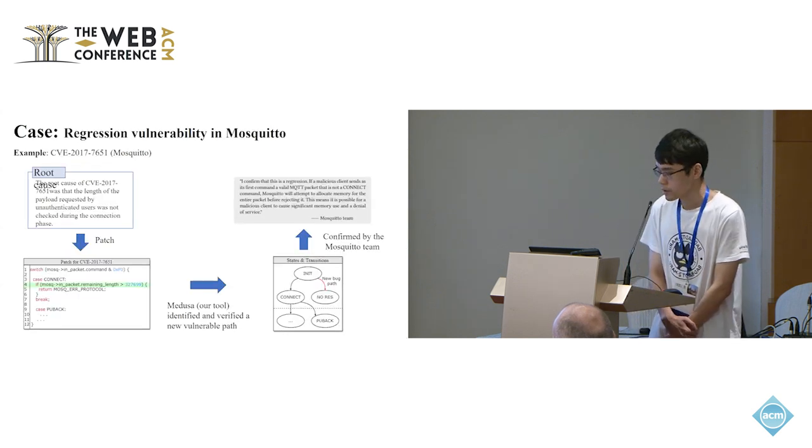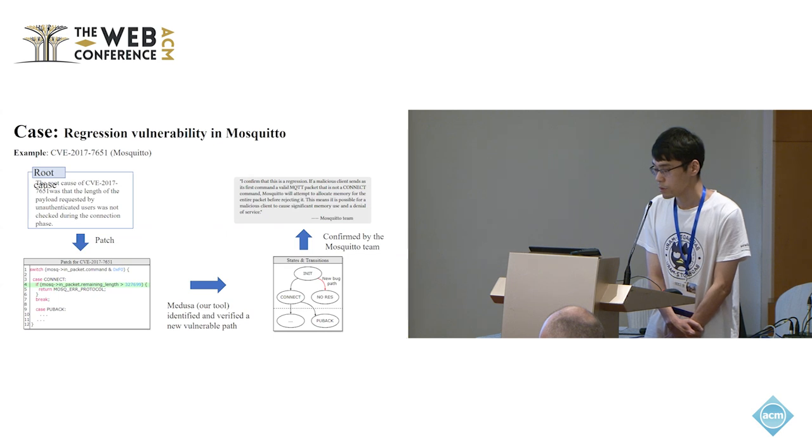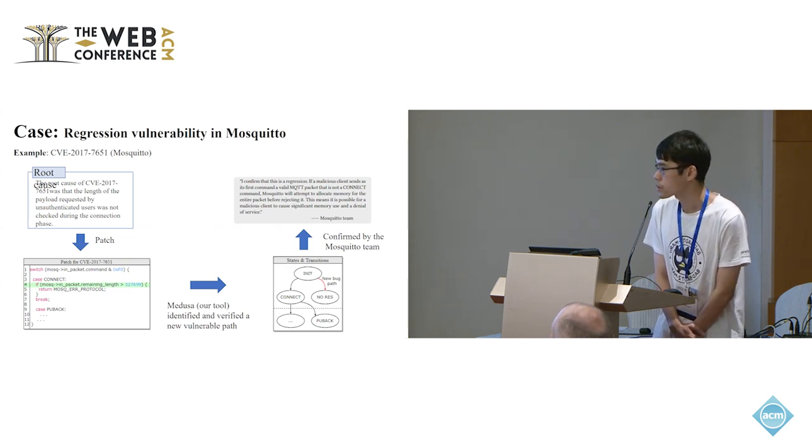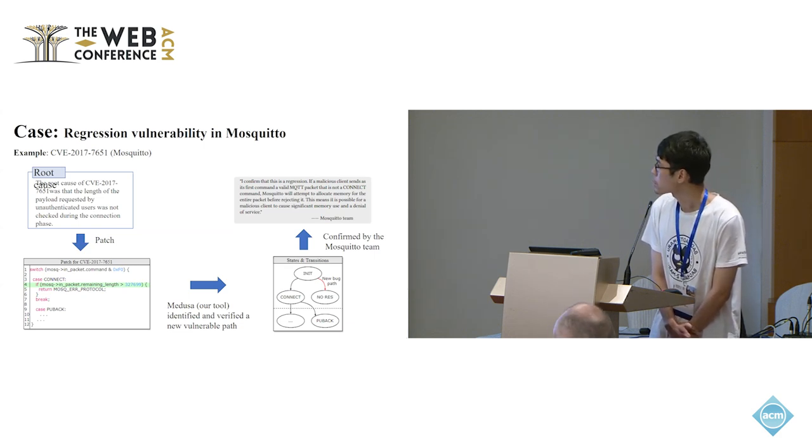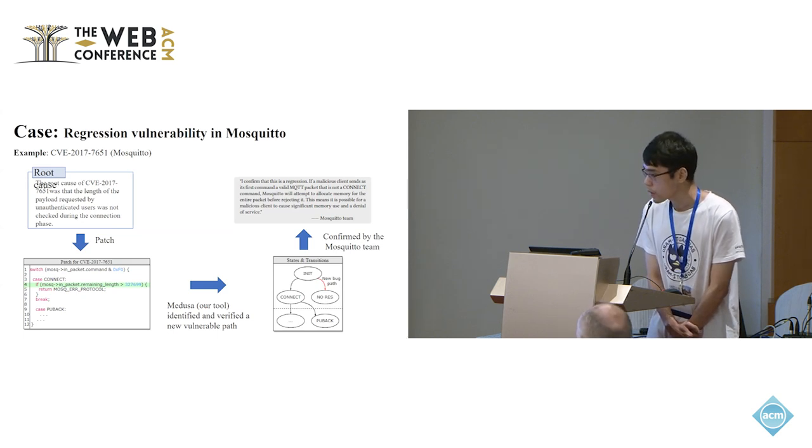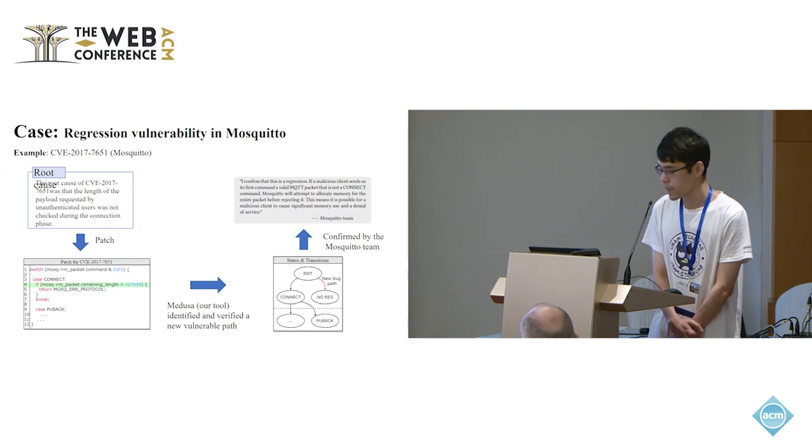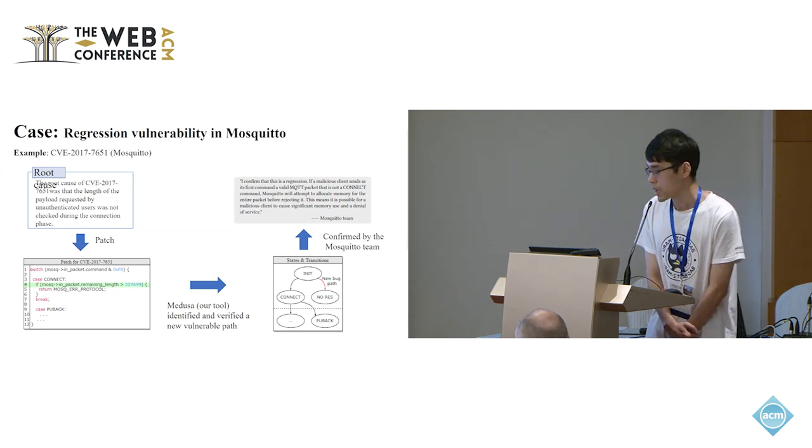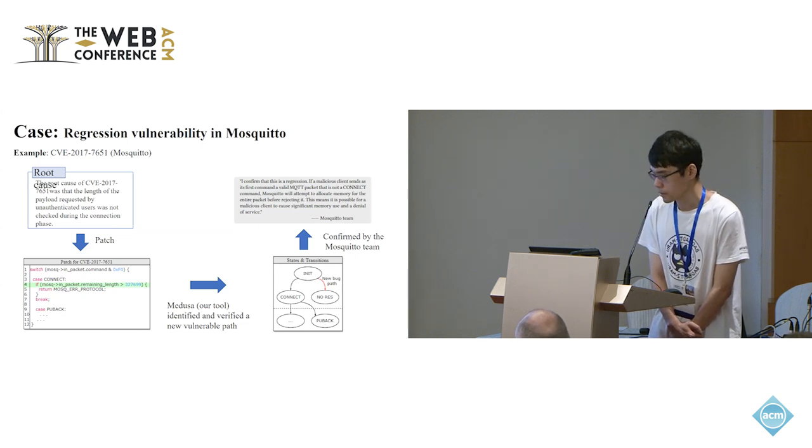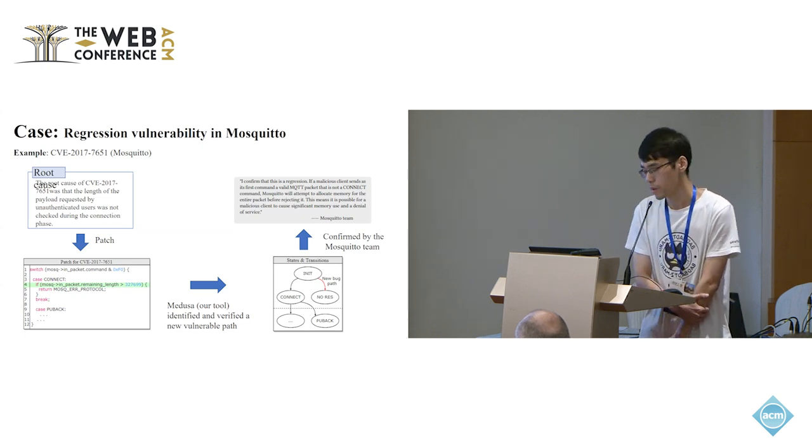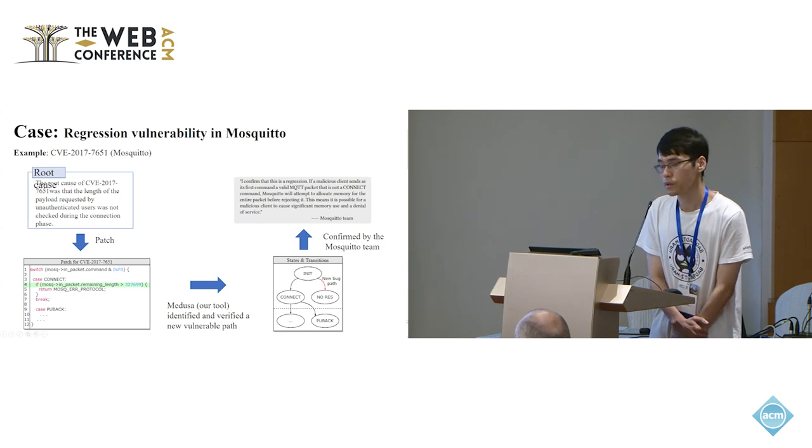Here, we introduce a case in the discovered vulnerabilities. It's a regression vulnerability in the Mosquito program. Mosquito is a mainstream C language implementation of MQTT protocol. The original vulnerability of this regression is CVE-2017-7651 and this CVE has been patched. The patch limits the maximum length of the corresponding packet to prevent DoS. However, MEDUSA discovered a new state transition path which can still cause memory exhaustion DoS. We reported this new vulnerability to the Mosquito team and they quickly confirmed it as regression and assigned it with a new CVE ID.